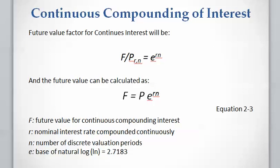So the compound amount factor, or future value factor, for continuous interest is e^(rn). The future value can be calculated as F = P · e^(rn), where F is the future value, r is the nominal interest rate compounded continuously, n is the number of discrete valuation periods (one year, two years, three years, etc.), and e is the base of the natural log.